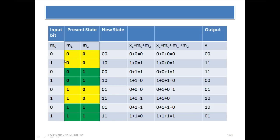Now if the present state is 00 and the input bit is 1, the output will be 11 and the new state will be 10. M1 is shifted to M2, M2 is discarded, and M0 is moved to M1, giving the new state 10 as shown.